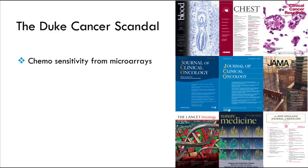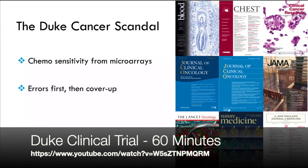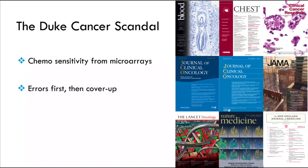In the mid-2000s, Neil Potti and Joseph Nevins of Duke University tried to predict sensitivity of tumor cells to chemotherapeutic agents using microarray gene expression data. These were some of the first papers using microarrays for personalized oncology, generating huge excitement. They were published in high-profile journals like JAMA, Lancet Oncology, Nature Medicine, and the New England Journal of Medicine. Unfortunately, there were a number of serious errors in that data analysis.